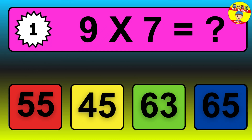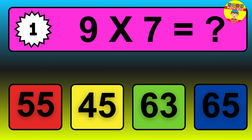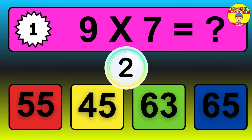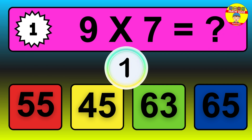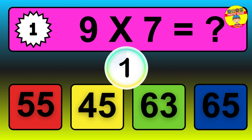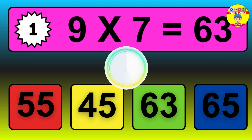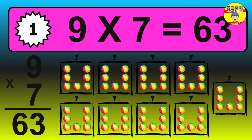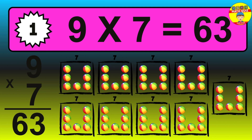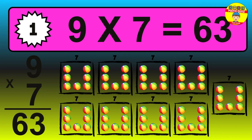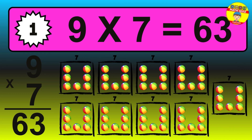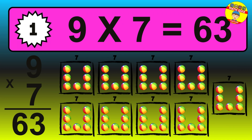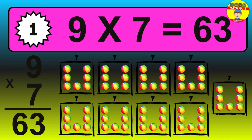Question 1. 9 times 7 equals what? The answer is 9 times 7 is 63. To calculate, we have 9 groups with 7 balls each one. So, how many balls do we have? 63 balls.